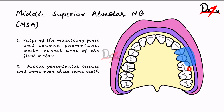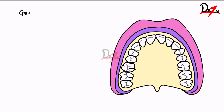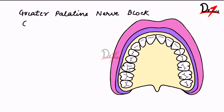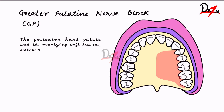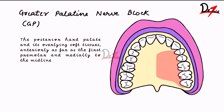So for extracting the first molar, you can give the PSA nerve block, the MSA nerve block, as well as the greater palatine nerve block. The greater palatine nerve block covers from the midline anteriorly to the premolar and posteriorly to the last molar — the entire palatal area, including bone and soft tissues. It covers the posterior hard palate and its overlying soft tissues anteriorly as far as the first premolar and medially to the midline.